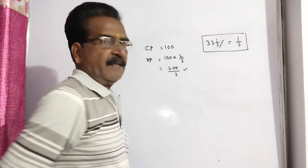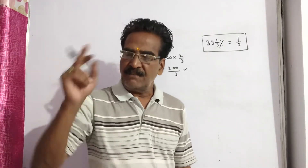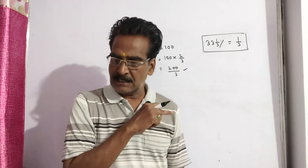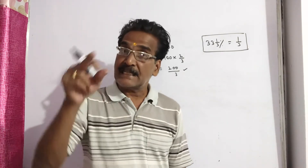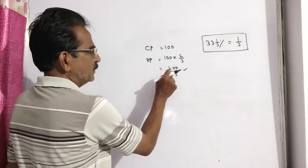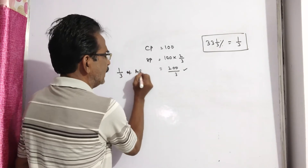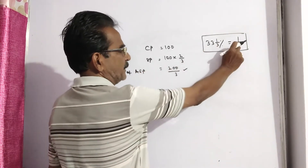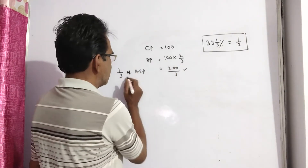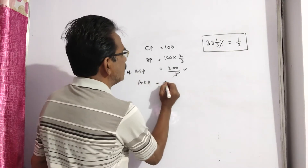This is the sold price. This sold price is one third of the actual selling price, because it is sold at 33⅓ percent — that is 1/3 — of the actual selling price. So, 1/3 of actual selling price equals 200/3, which means the actual selling price is rupees 200.